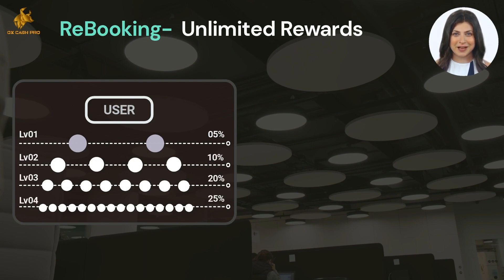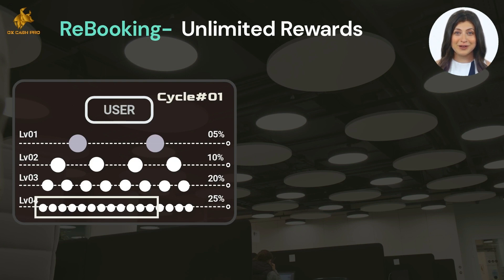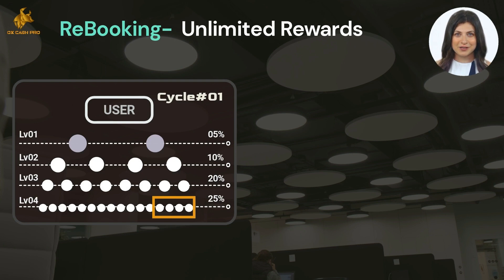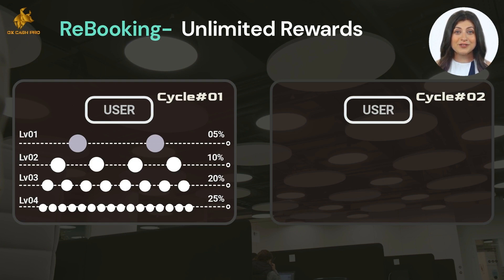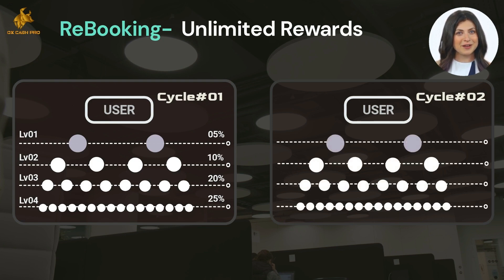In the fourth level, 25% of level income from 12 buyers is credited to your account. The last four rewards from level four — 25% from each — are summed up by the AuxCash Pro smart contract, which automatically creates a new cycle and a new user ID for you. Through that new user ID, your earnings start again without any additional investment. Your existing downlines who complete their own cycle are also automatically placed below you in Cycle Two.